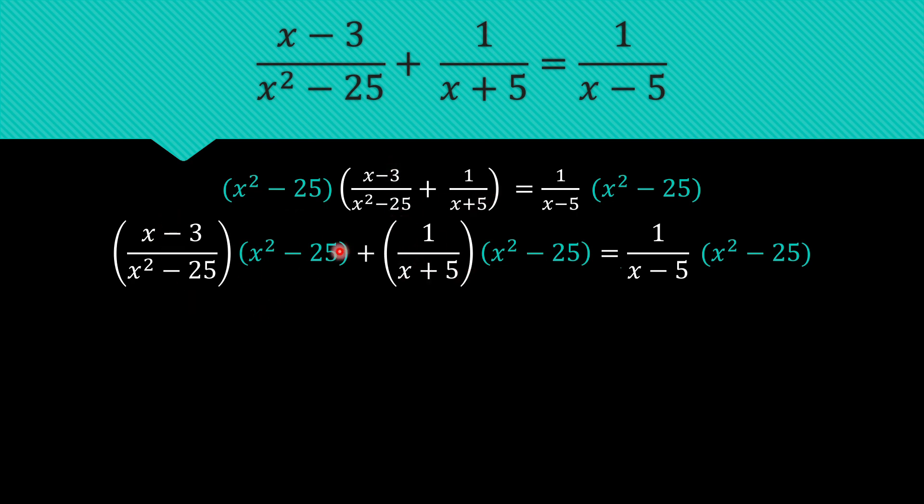So from here, we just cancel what we can cancel. So the most obvious move would be cancelling x squared minus 25 here and there. So we cancel that and we successfully got rid of the denominator in this expression.